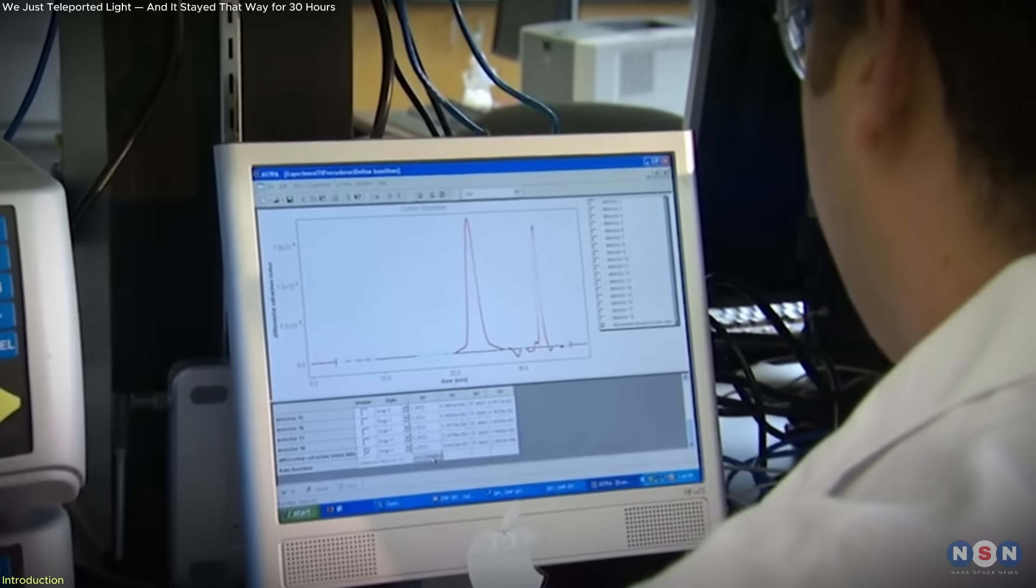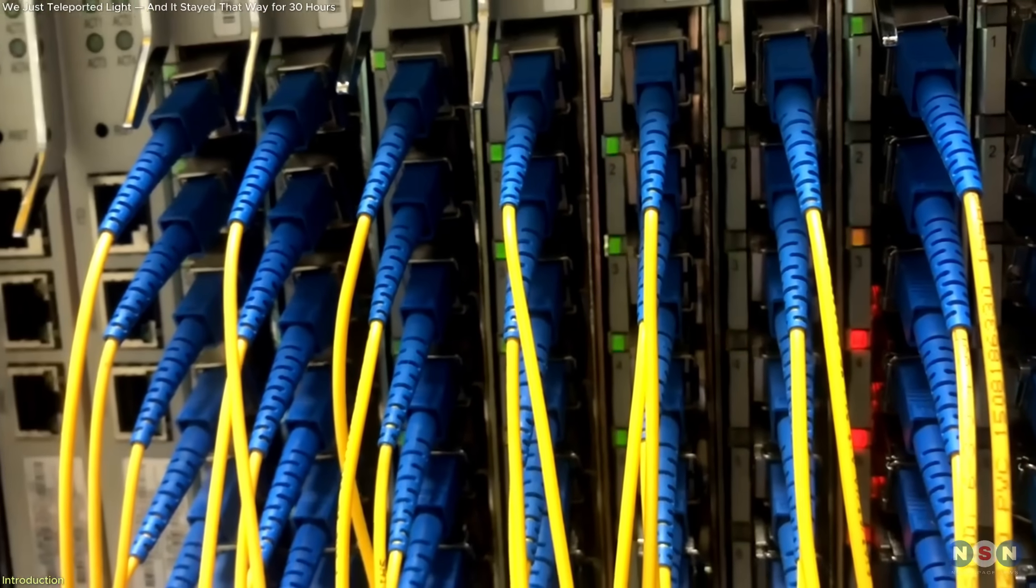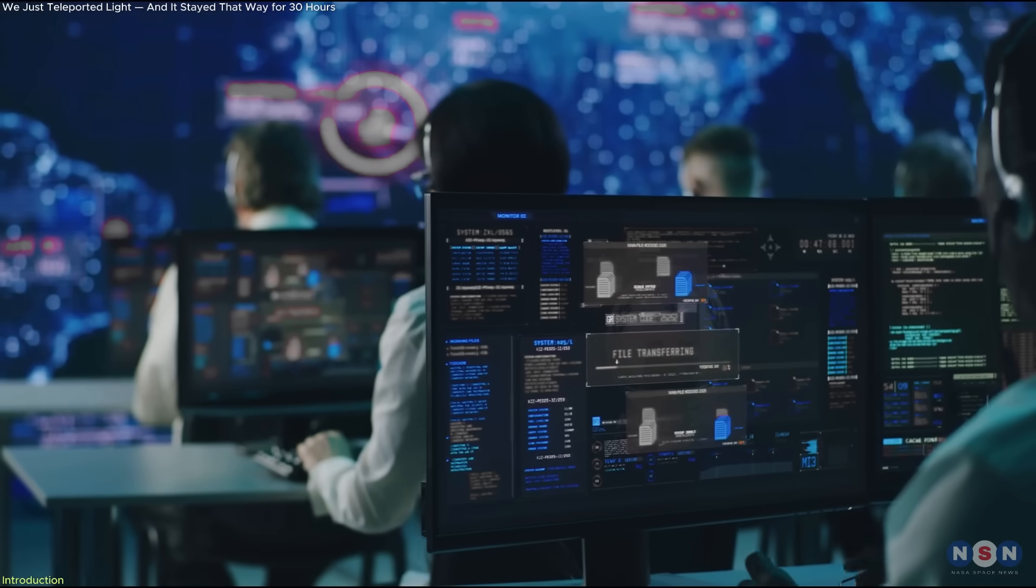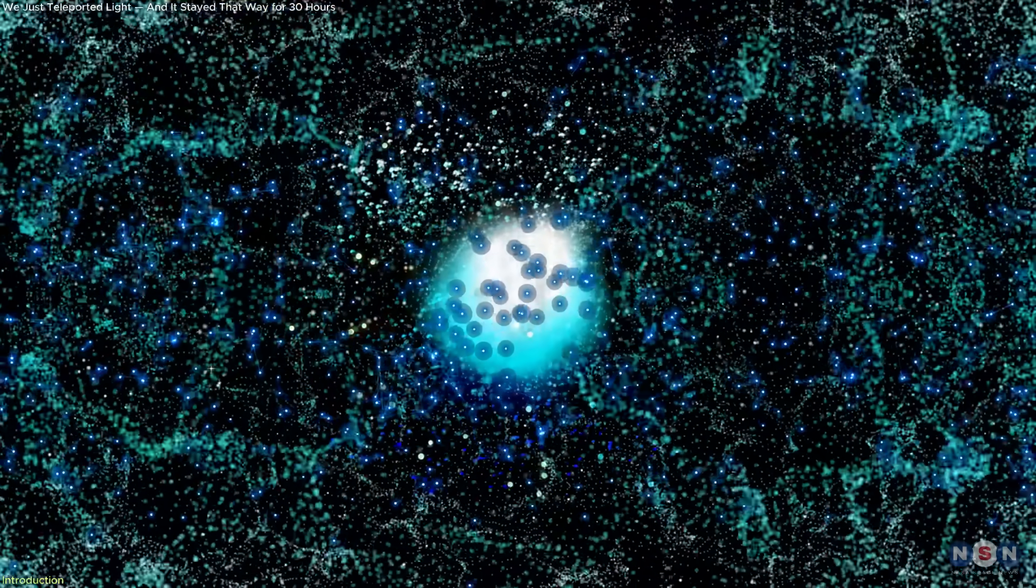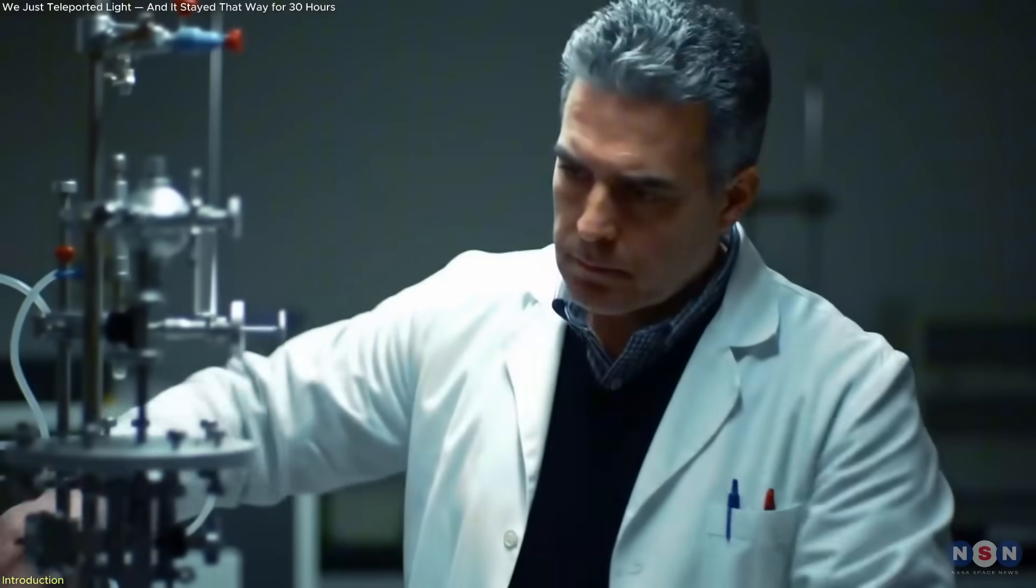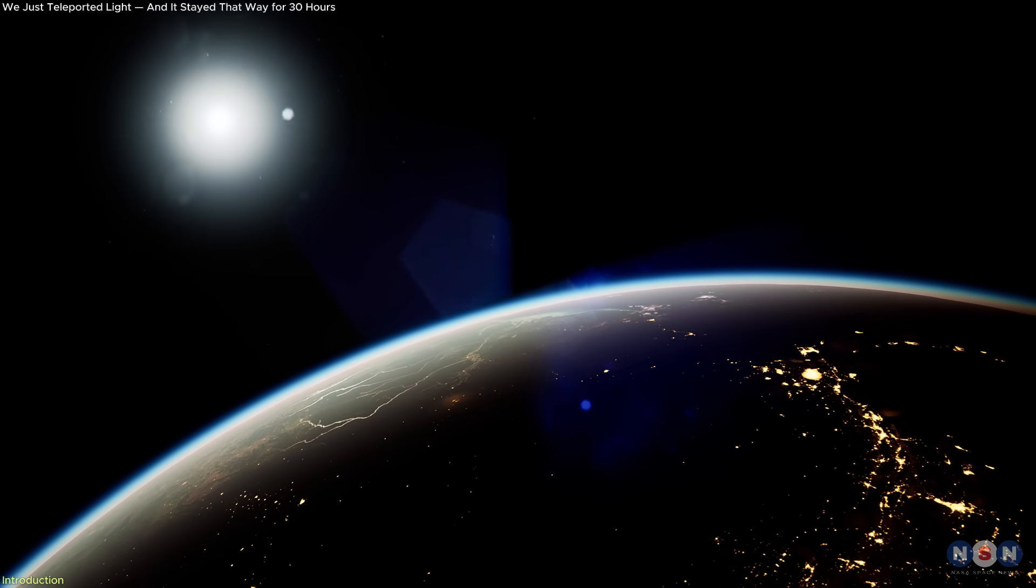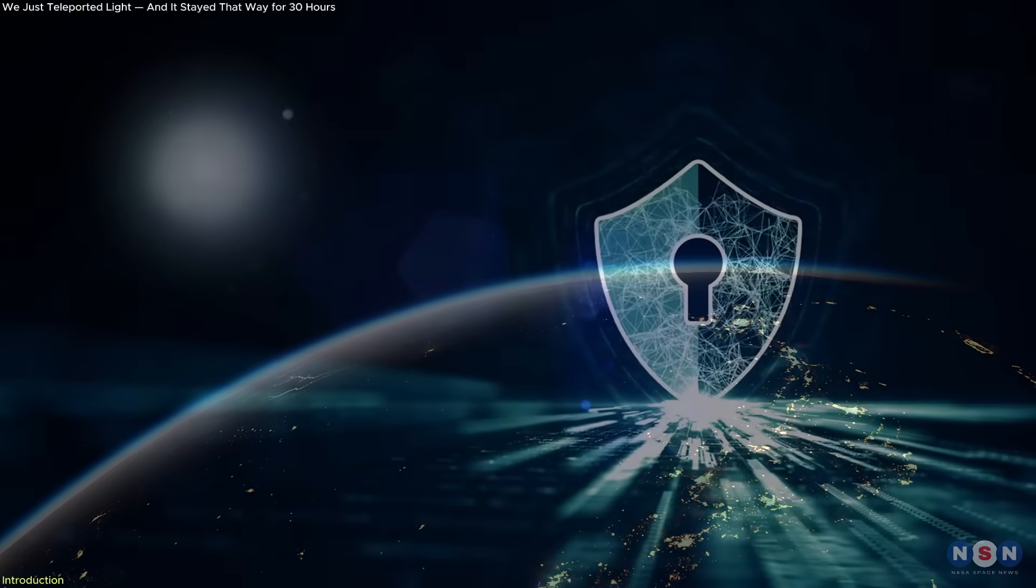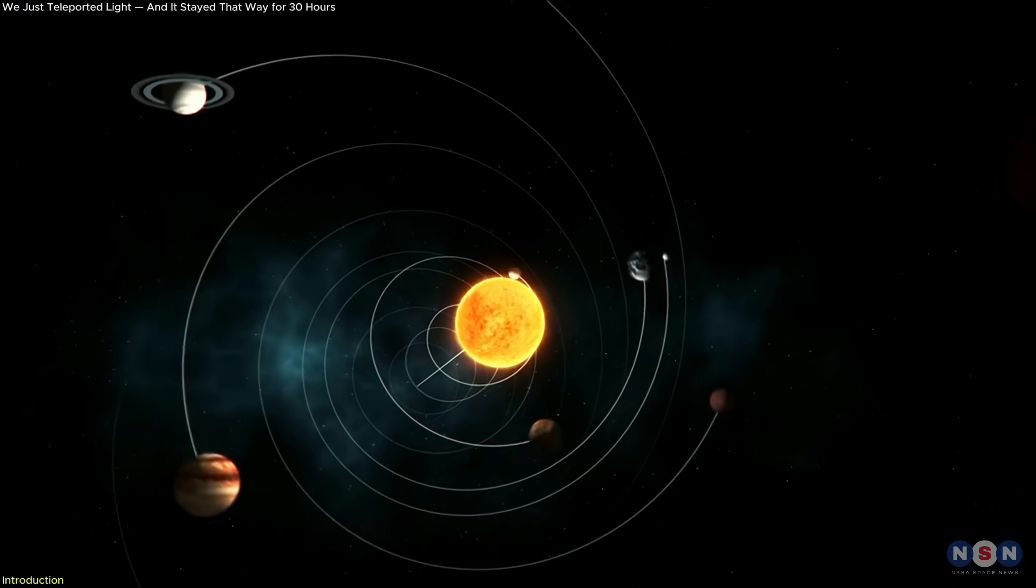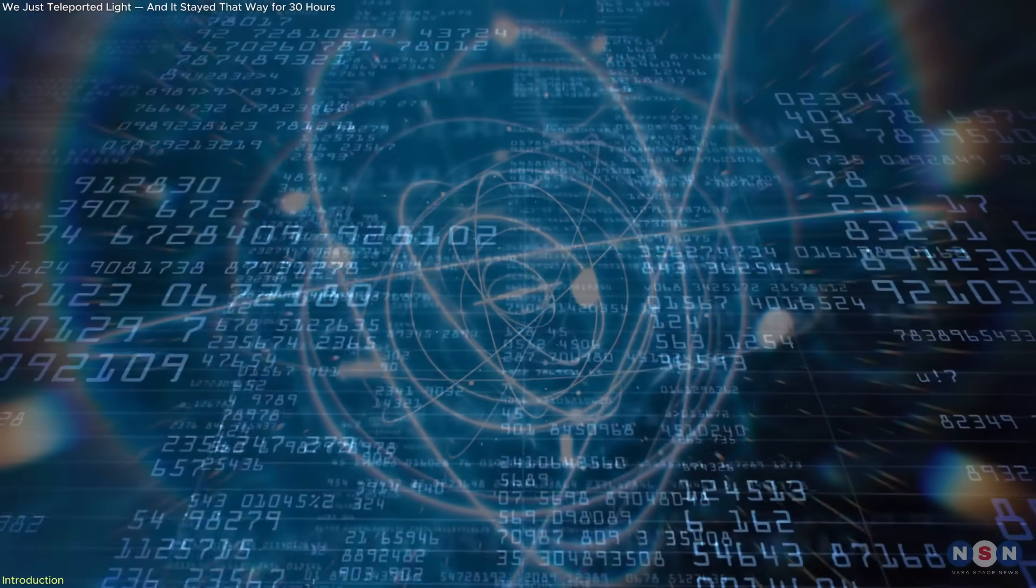And this wasn't science fiction or an isolated lab test. It happened across a functioning, real-world internet connection. Researchers stabilized the connection with a clever technique that actively corrected environmental disturbances in real time. What they achieved might reshape how we send information, not just across cities, but across galaxies. From data security to space communication, it hints at a future where distance becomes meaningless, and information moves without traditional limits.